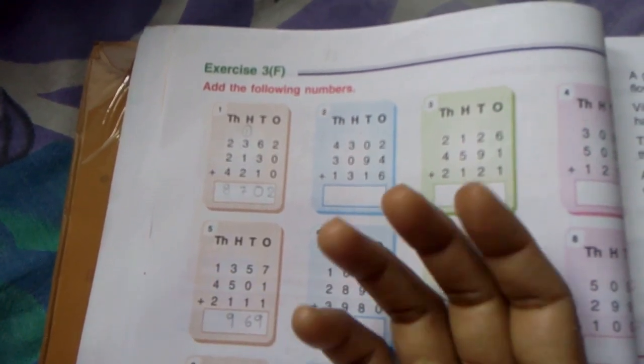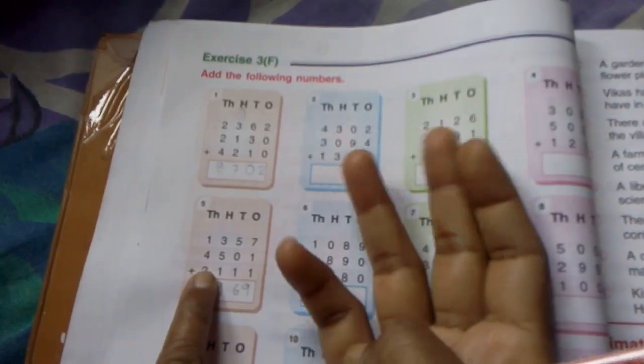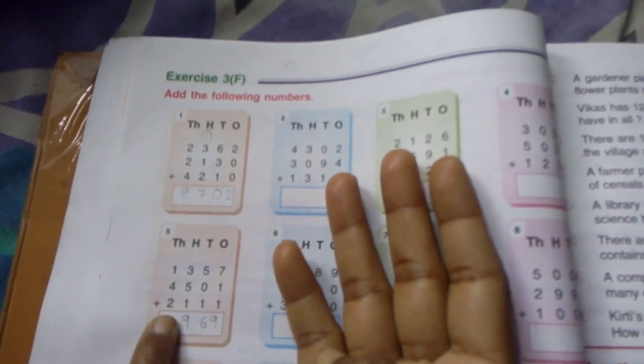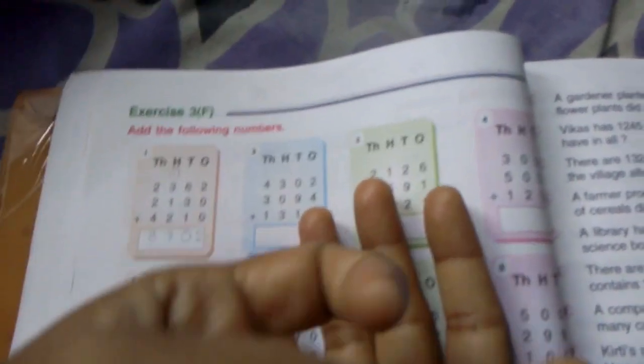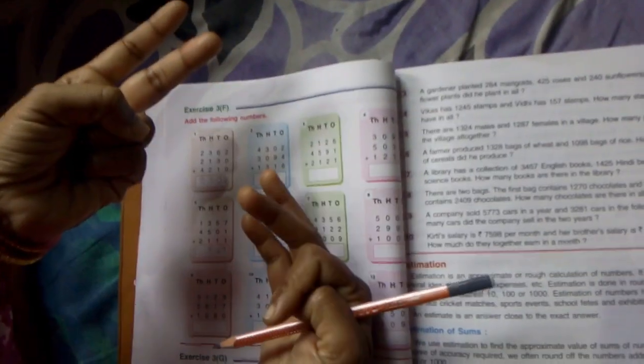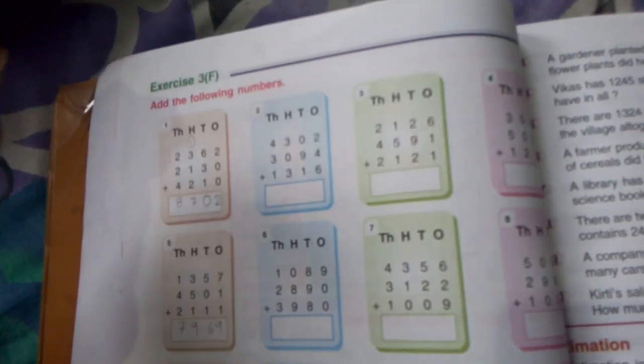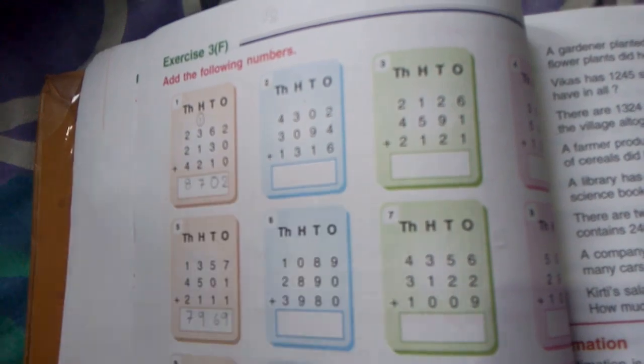1 is there, after that 4 is there. 5, 6, sorry. 1 is there, after that 4 is there. So you will take 4 fingers and then 2 is there. So like that also you can do. So you will count all together: 1, 2, 3, 4, 5, 6, 7. So like that you have to complete exercise 3F.